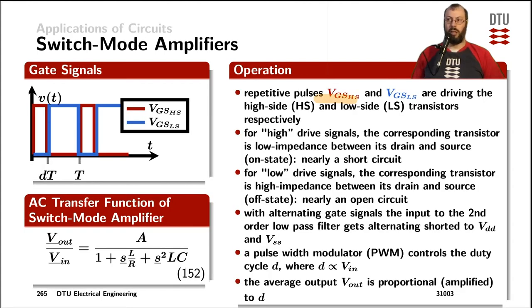Now the pulses driving the gate source voltage of the high side and the low side device are alternating, so you either have the high side device on or the low side device on. Where the on state again is nearly a perfect short, where the off state is a nearly perfect open. Again, through that short and open, we pull the so-called switch node all the way to the supply voltages. The information that we actually want to amplify,